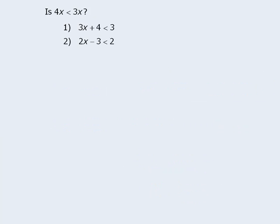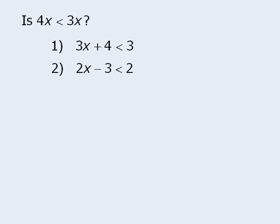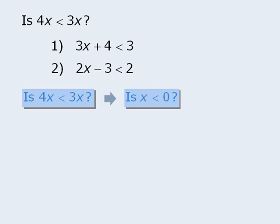Now let's examine a different question. The target question asks us to determine whether or not 4x is less than 3x. Is there another way we can rephrase this? If we subtract 3x from both sides of the inequality, we can rewrite the target question as: is x less than 0? Or we can rewrite that as: is x negative? There are three different ways to phrase the target question, and the last two versions make it a lot easier to answer — it's much easier to determine whether x is less than 0 than whether 4x is less than 3x.